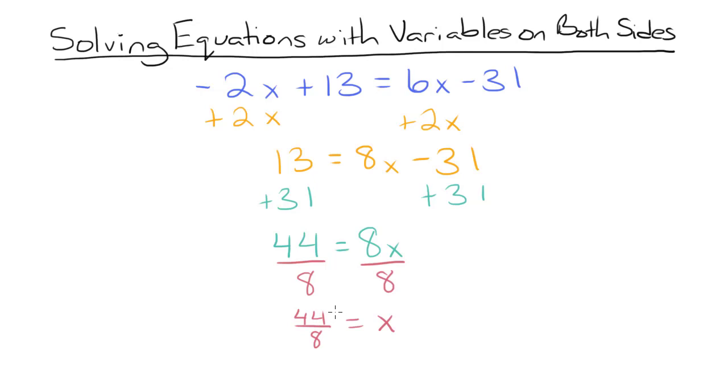The way that we can simplify this fraction is by dividing both the numerator and denominator by 4. So when we do that, we'll leave our x alone over here. 44 divided by 4 is 11. And 8 divided by 4 is 2. So x is equal to 11 over 2.